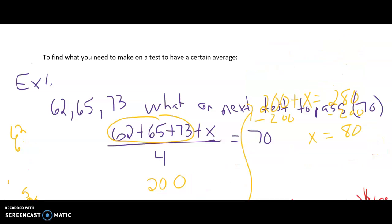When you are setting up these problems, what you're going to do is take the sum of your test scores plus your unknown, divide it by the total number of tests, and set it equal to the average that you want to obtain, and then solve that equation.